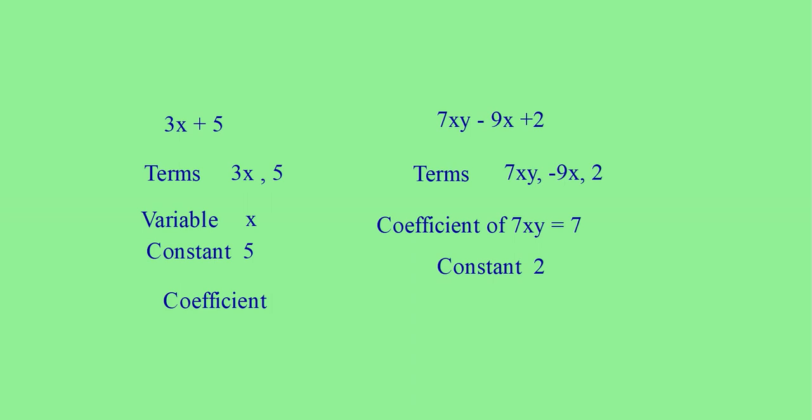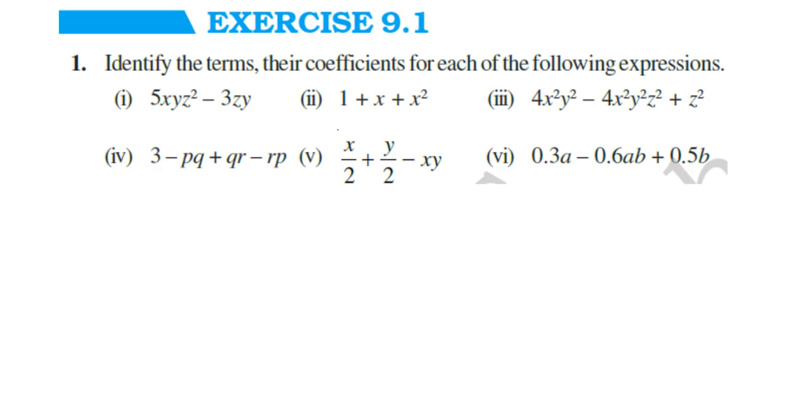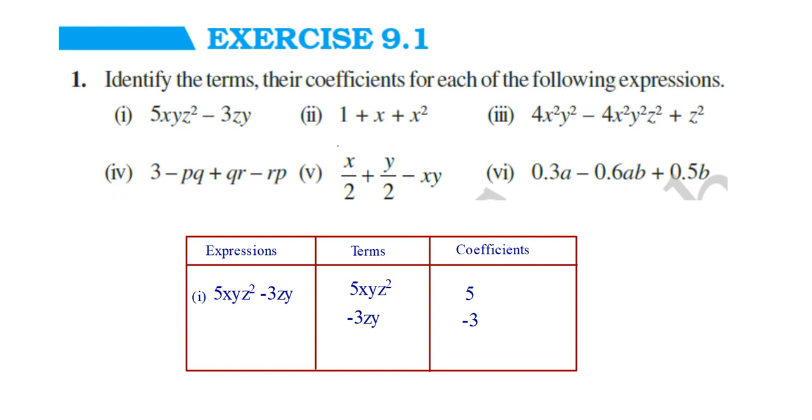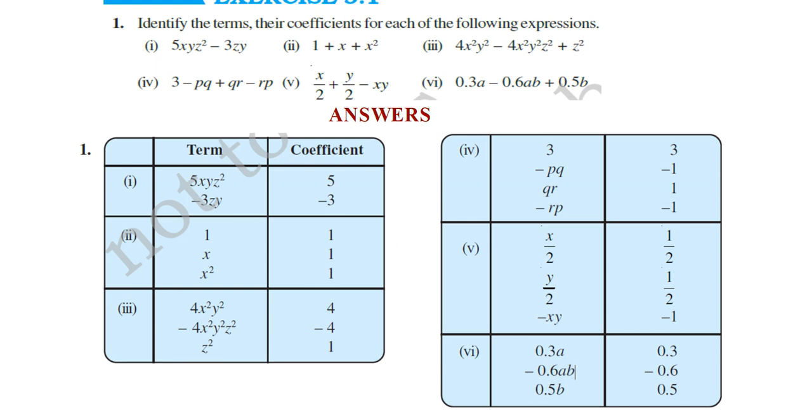Now, what are the variables used in this expression? Variables are x and y. Here is your exercise 9.1. Identify the terms, their coefficients for each of the following expressions. Let us see the first question: 5xyz square minus 3zy. What are the variables used in that? x, y and z. Now, let us find out the terms and their coefficients. Let us make a table. Expressions, terms and coefficients. The first question is 5xyz square minus 3zy. Now, tell me what are the terms here? The terms are 5xyz square and minus 3zy. Now, write the coefficients of each term. They are 5 and negative 3. Let us complete all the questions. Here are your answers. Do verify yourself.